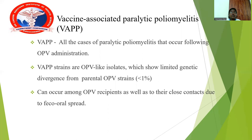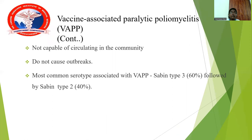Vaccine-associated paralytic poliomyelitis (VAPP) refers to all cases of paralytic poliomyelitis occurring following oral polio vaccine administration. VAPP strains show limited genetic divergence from the parental OPV strains — less than 1%. It can occur among OPV recipients and their close contacts due to fecal-oral spread. VAPP is not capable of circulating in the community and does not cause outbreaks. The most common serotype is Sabin type 3, accounting for 60%, followed by Sabin type 2 at 40%.